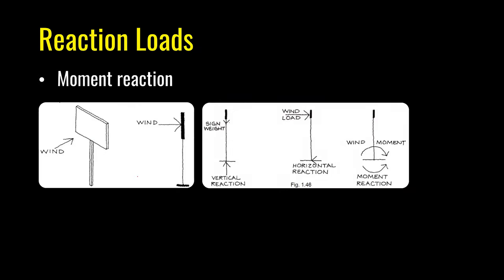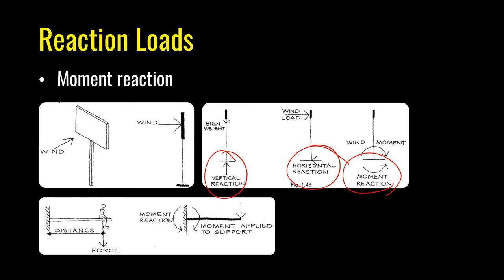The same principle applies to weighing scales. A sign post acts as a vertical cantilever — the wind force acting at a height from the ground causes a moment at ground level. Many structures require more than one type of reaction; the support of a sign post provides vertical, horizontal, and moment reactions. Similarly, a person sitting at the end of a cantilever causes a moment at the support, which must provide a moment reaction to prevent the plank from rotating away from the wall.